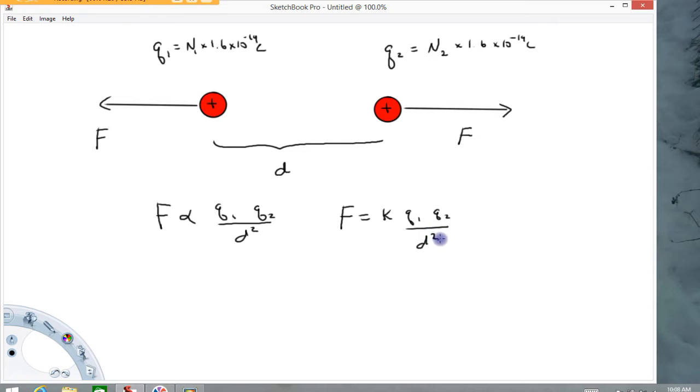The reason it ends up being distance squared, well, that has to do with the spherical symmetry of the problem. And again, I'm going to save that for another video right now. I'm just going to say for now, the square is because it has spherical symmetry.